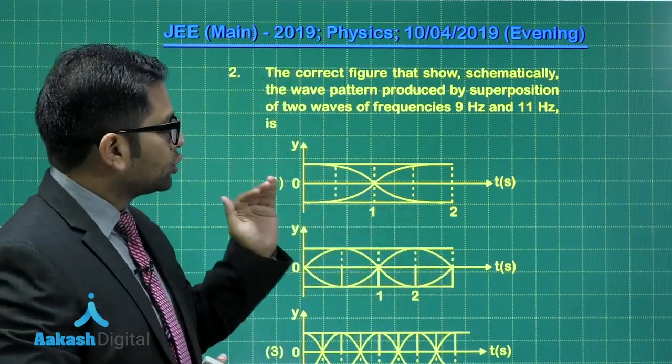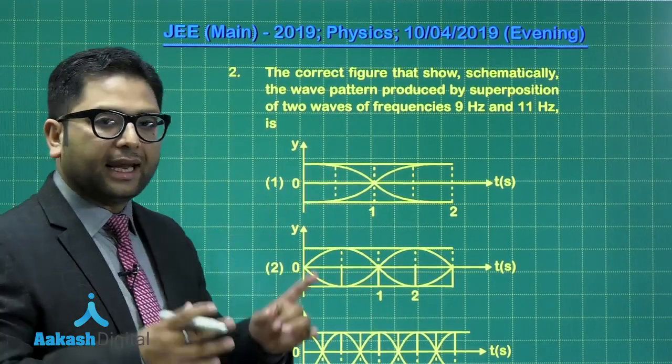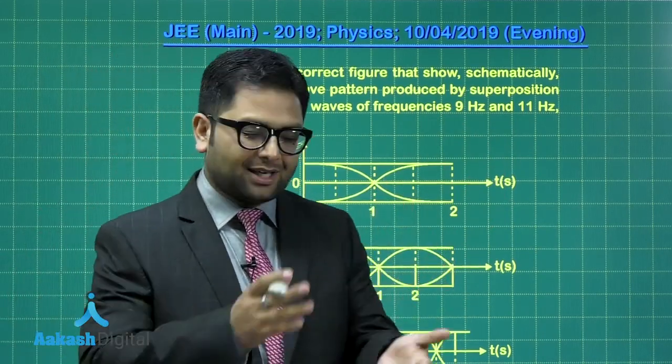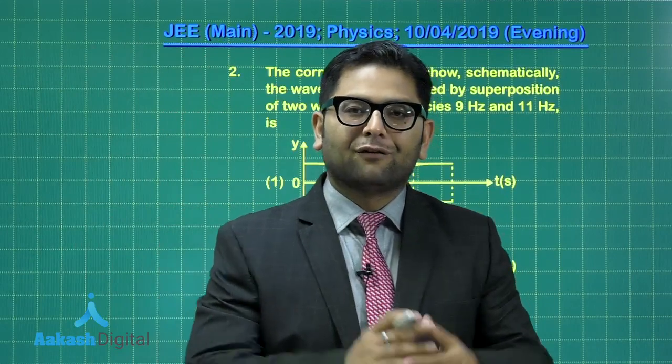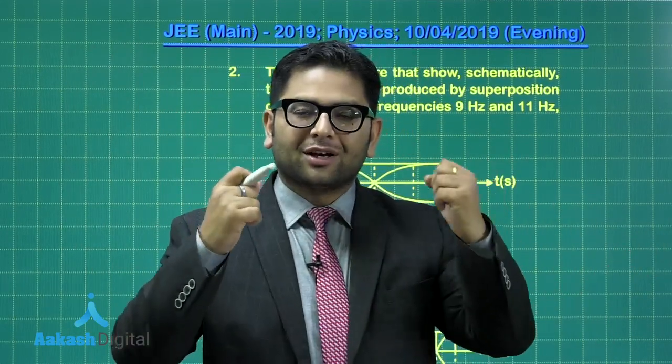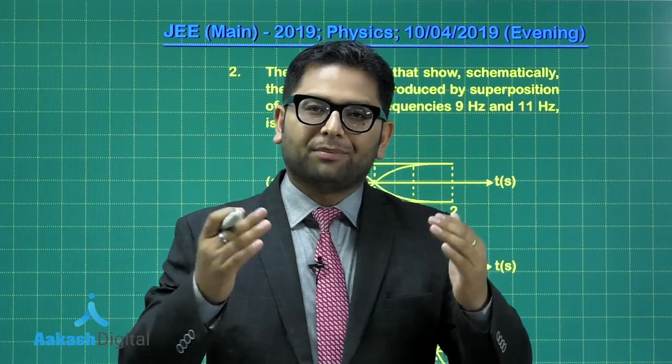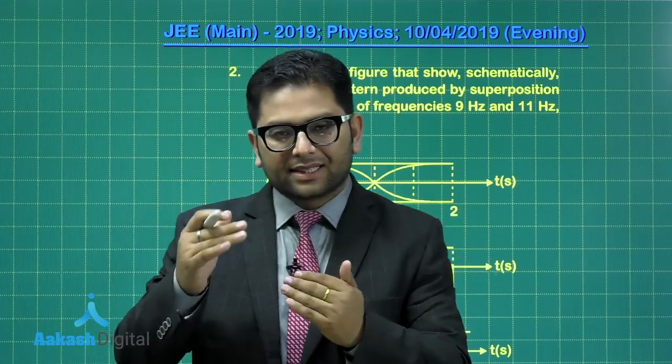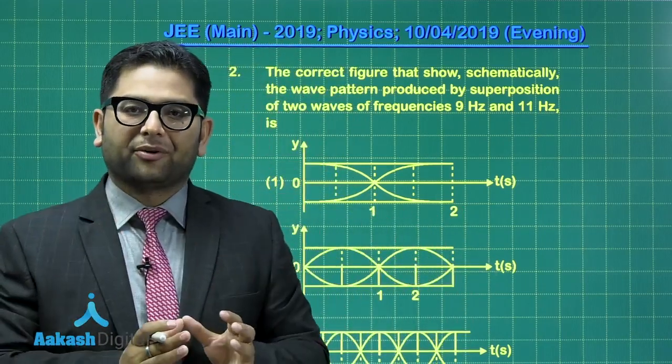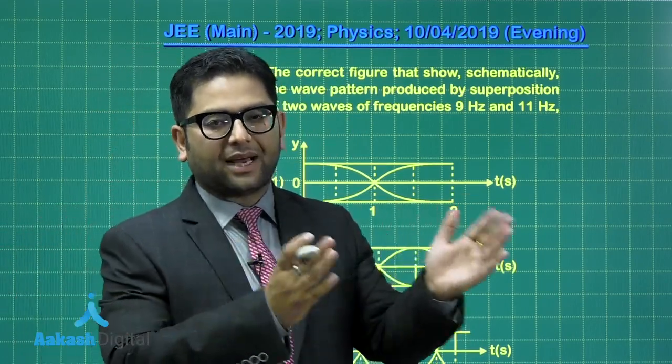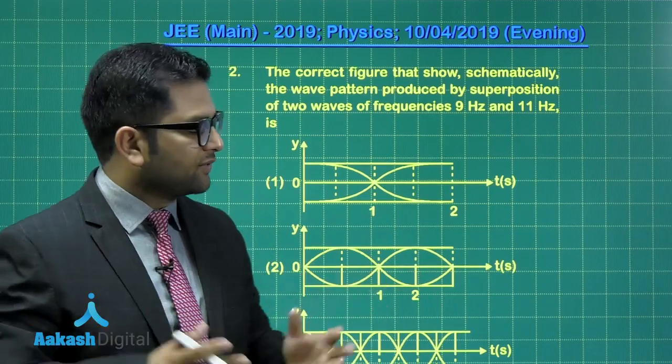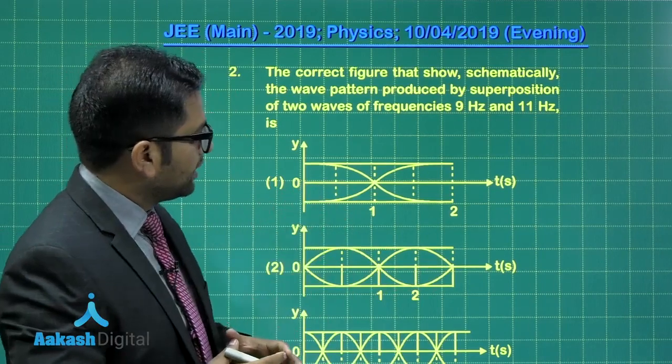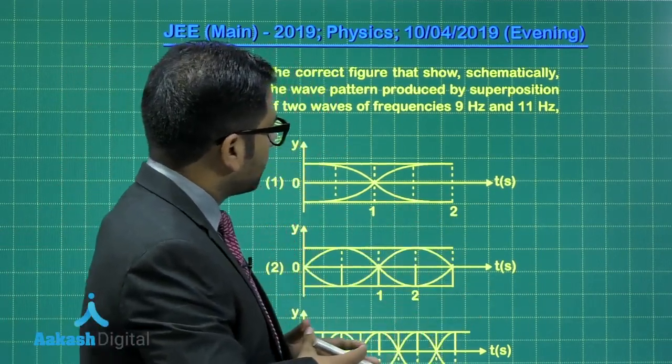There are two waves that are superimposed and the individual waves have frequencies 9 Hz and 11 Hz. This is the most appropriate condition for beats to happen. You recall all those required expressions. We know that beats happen when two waves superimpose, provided the frequencies vary by a slight amount. The beat frequency is 11 minus 9, so that is 2 Hz, the difference in frequency.